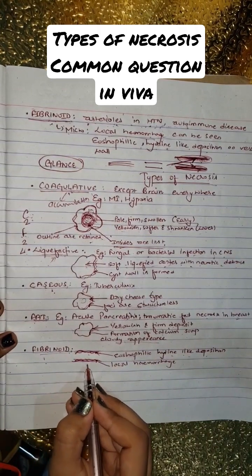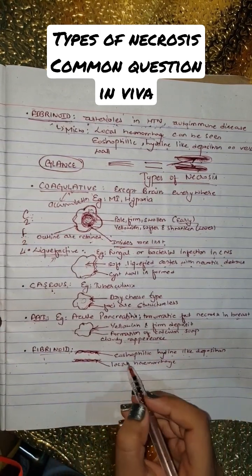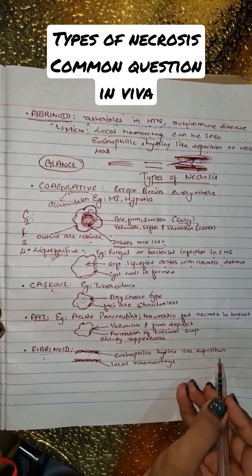Fibrinoid can be found in arteries, in hypertension or autoimmune disease. Eosinophilic hyaline-like deposition can be found.